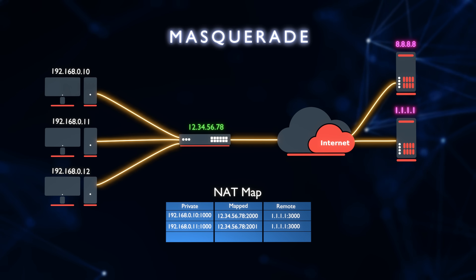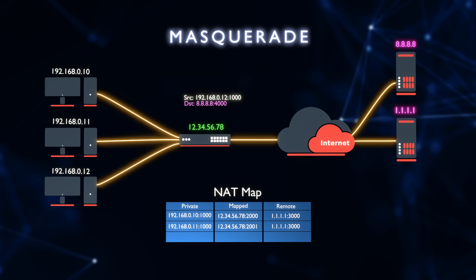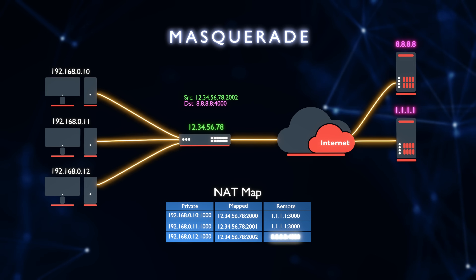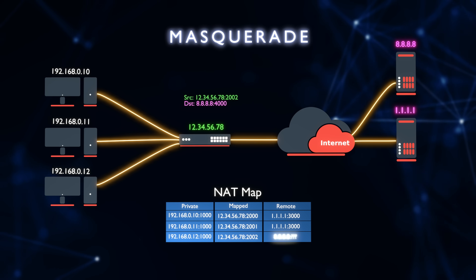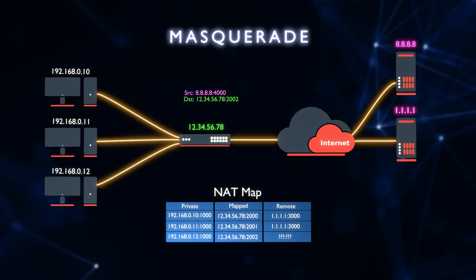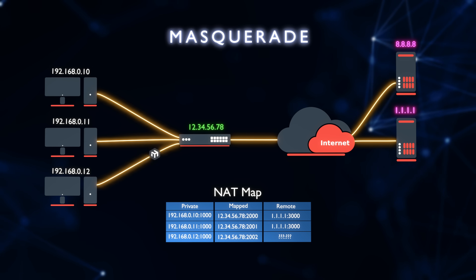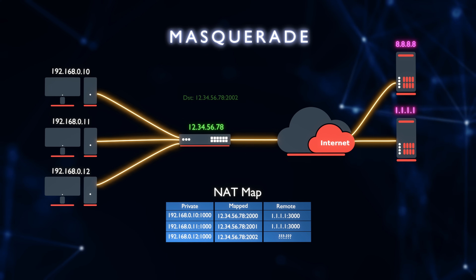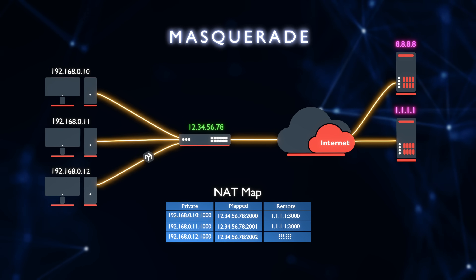At the other end of the spectrum, there is endpoint independent mapping. When the gateway receives the packet and updates the map, instead of recording the exact remote endpoint, it could also record only the IP or even nothing at all. In that case, not only can the contacted server send replies, but also anyone on the internet. The port becomes exposed and that comes with security risks, so most home routers will not do this unless you explicitly configure it.